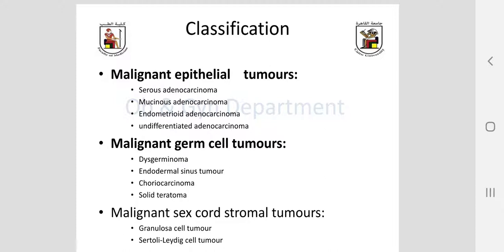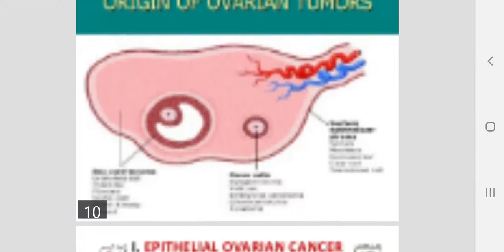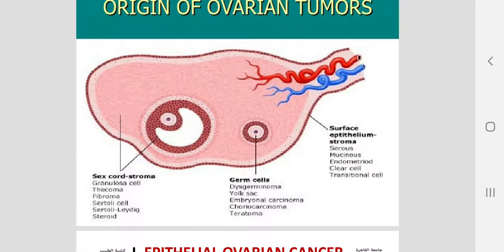Classification of malignant ovarian tumors: there are three different types of cells in the ovary — epithelial cells covering the external surface, germ cells from which oocytes are formed, and connective tissue including sex cord stromal cells. Epithelial cells can give rise to serous adenocarcinoma, mucinous adenocarcinoma, endometrioid adenocarcinoma, or undifferentiated adenocarcinoma. Undifferentiated includes clear cell and transitional cell types.